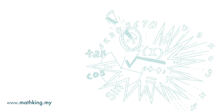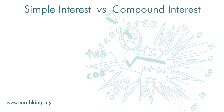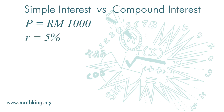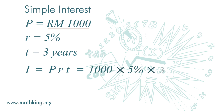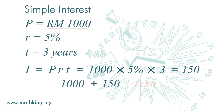Now let's compare what we will get under simple interest and compound interest for a principal amount of RM1,000 at an interest rate of 5% for a period of 3 years. Under simple interest, the principal is 1,000. The formula for interest is principal times interest rate times time period. So the interest is 1,000 times 5% times 3 years, which is 150. By the end of 3 years, you will get 1,000 plus 150, which is RM1,150.